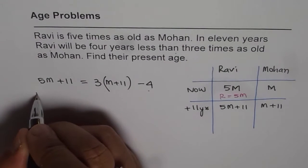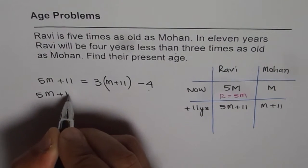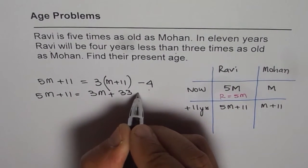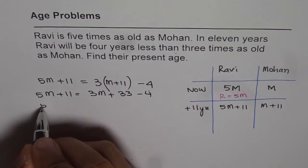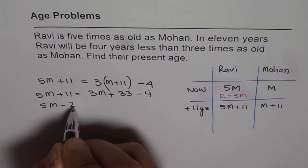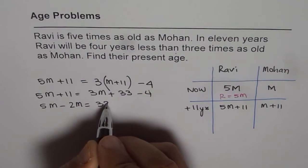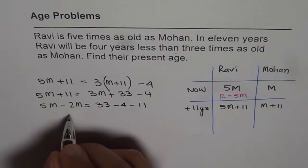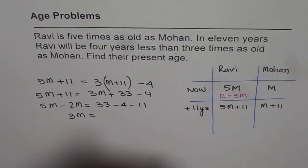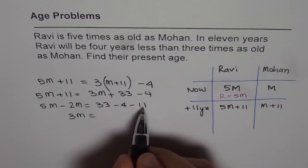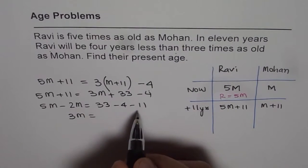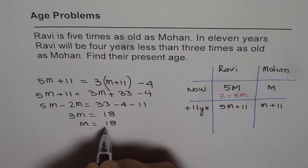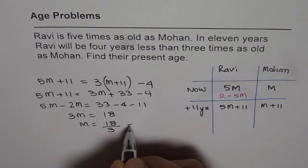Now we need to expand and simplify. So 5M plus 11 equals 3 times (M plus 11) minus 4, which gives 3M plus 33 minus 4. Bringing variables together: 5M minus 3M equals 33 minus 4 minus 11, so 3M equals 18, and M equals 18 over 3, which is 6.